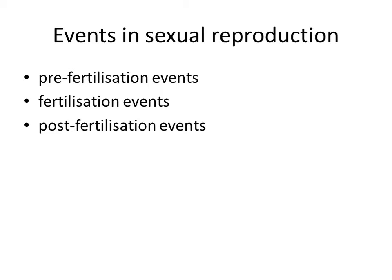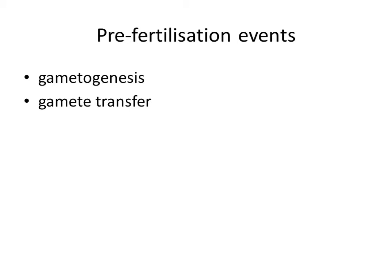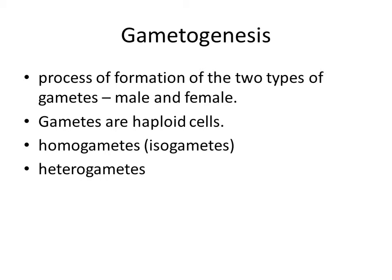Pre-fertilization events include all the events of sexual reproduction prior to the fusion of the gametes. The two main pre-fertilization events are gametogenesis and gamete transfer. Gametogenesis refers to the process of formation of two types of gametes — male gametes and female gametes. Gametes are always haploid cells.